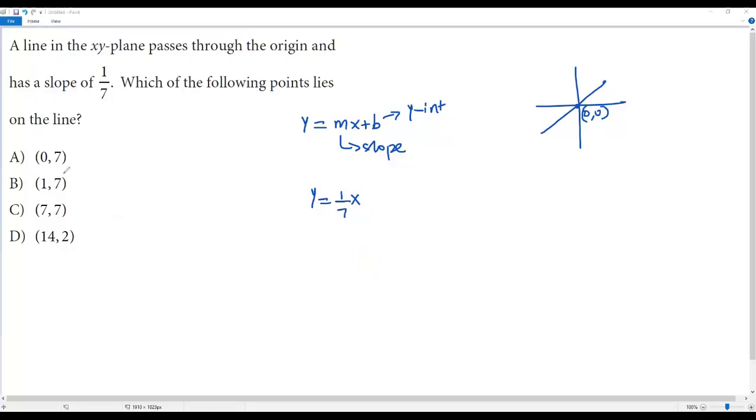Now let's take the point in option B, which is (1, 7). We plug in 7 for y and 1 for x. So 7 = (1/7)(1) = 1/7. This is also false because 7 and 1/7 are not equal.